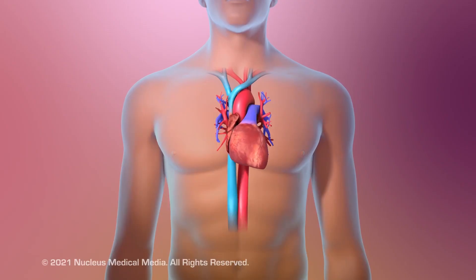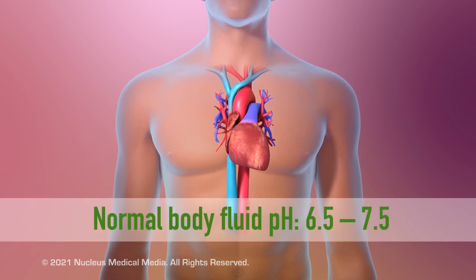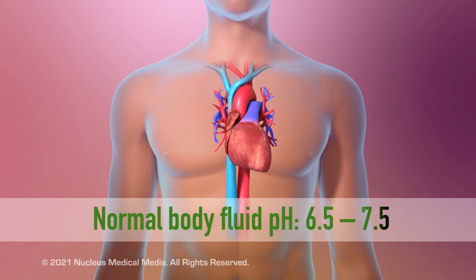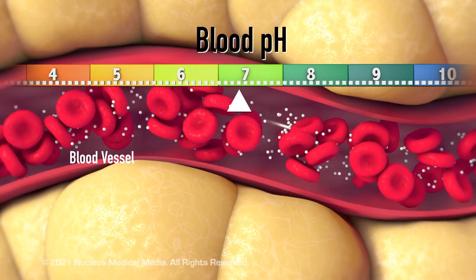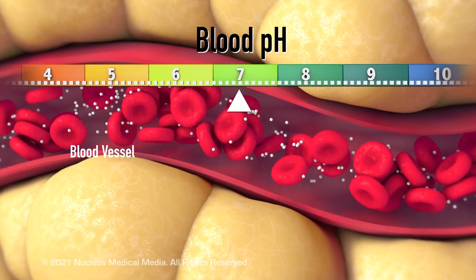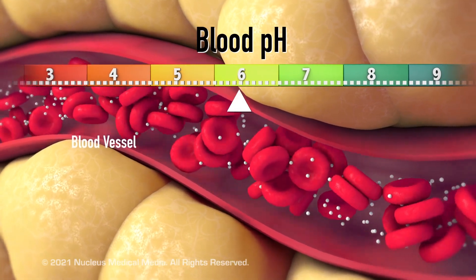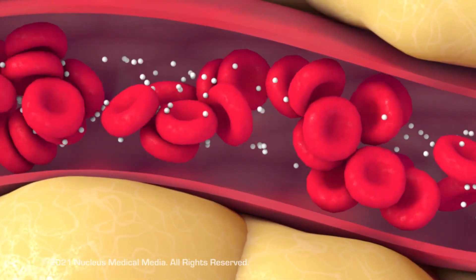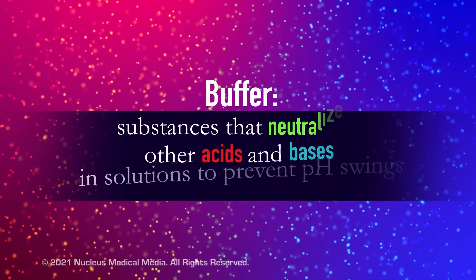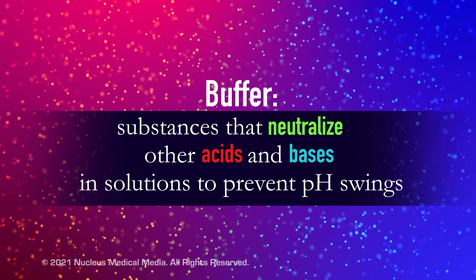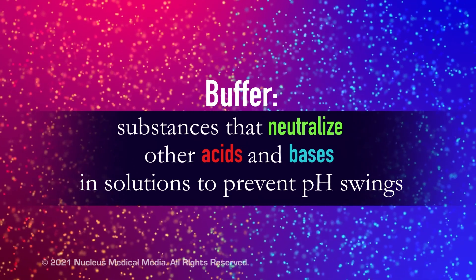To function properly, biological processes in the human body require fluids with a pH in the range of approximately 6.5 to 7.5. For example, the normal pH of blood is 7.4. If acids or bases in the blood lower or raise the pH too much, a person could become sick or die. One way the body controls pH is through the use of different buffers. Buffers are substances that neutralize other acids and bases in solutions such as blood to prevent dramatic swings in pH.